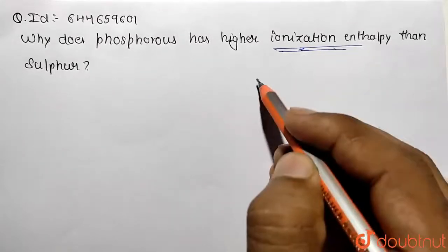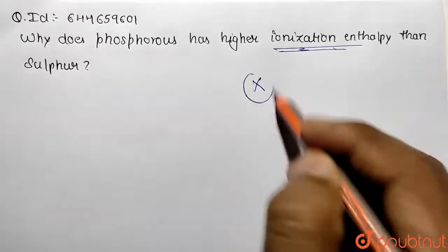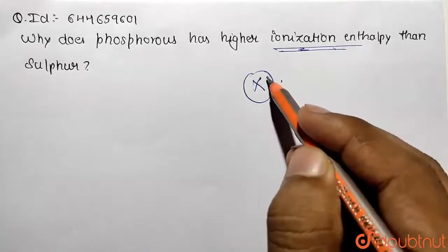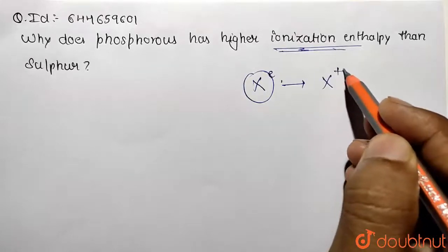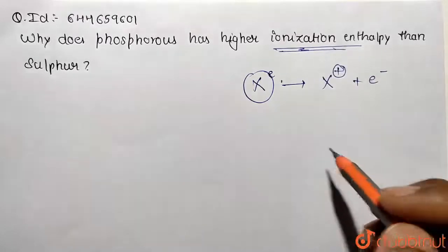It is removal of an electron from its valence shell. So let X is the atom and if we want to remove its electron from the valence shell then this process is called ionization process and correspondingly cation will be formed and electron will be removed out.